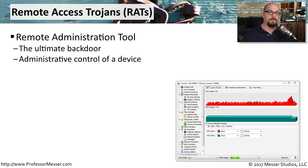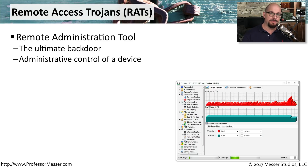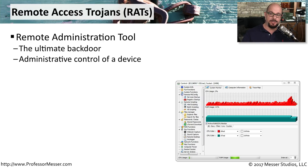One category of a Trojan horse that sets up a back door and begins to provide administrative access to your computer is a remote access Trojan. These RATs are often downloaded with other types of software, and once you execute that software, they embed themselves into your operating system. You might also see these referred to as remote administration tools.